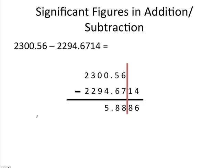It works the same way for subtraction. When we subtract 2,294.6714 from 2,300.56, again we want to line up our values and draw a line after the number with the least number of decimal places. This makes it easy to see that we will only be keeping three significant figures. Because 2,300.56 has two values to the right of the decimal point, we can only have two values to the right of the decimal point in our final answer. Although 2,300.56 has six significant figures and 2,294.6714 has eight significant figures, we will only be keeping three significant figures in our answer, which rounds to 5.89.